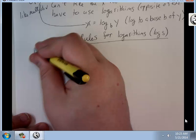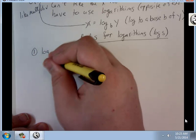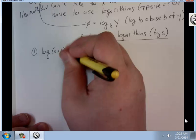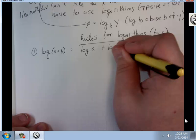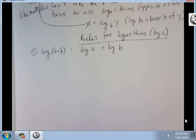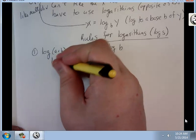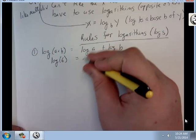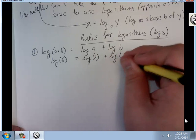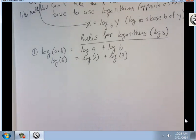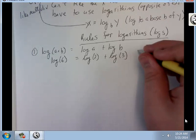First, log of a times b equals log of a plus log of b. So, the log of 6 equals the log of 2 plus the log of 3, because 2 times 3 equals 6.